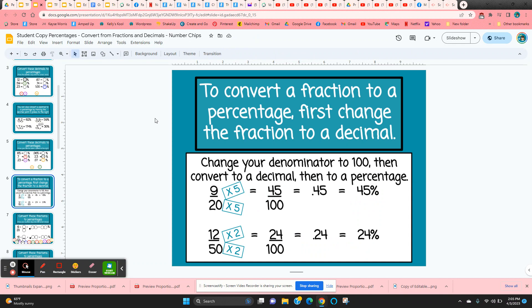Now to convert a fraction to a percentage, you first need to change that fraction to a decimal. So you need to change it to a fraction that has 100 in the denominator. So 9 twentieths, if we multiply the numerator and denominator by five, we get 45 hundredths, which would be 45 hundredths as a decimal, which would be 45%.